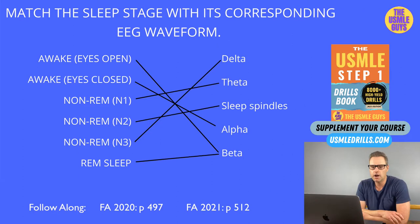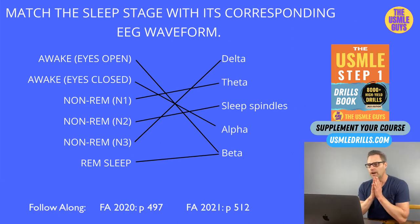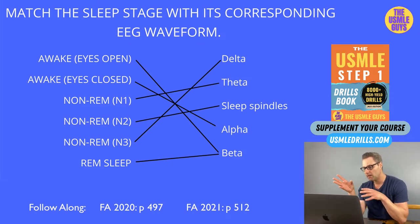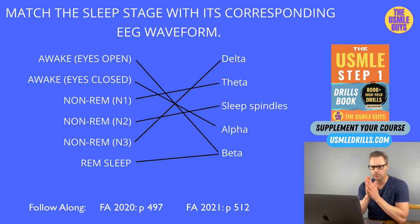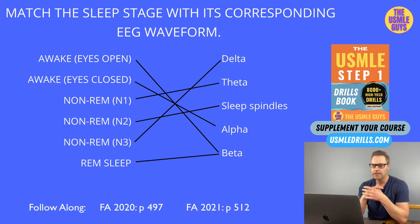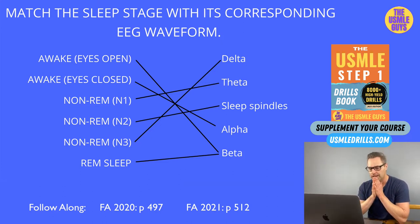All right, so here are your correct answers. If you need to fix anything, go ahead and hit the pause button. You'll probably notice that there were six options with five options on the right, so one thing would have two answers. Let's take a look now at the sleep physiology and the different stages of the sleep cycle that are commonly tested and very high yield.